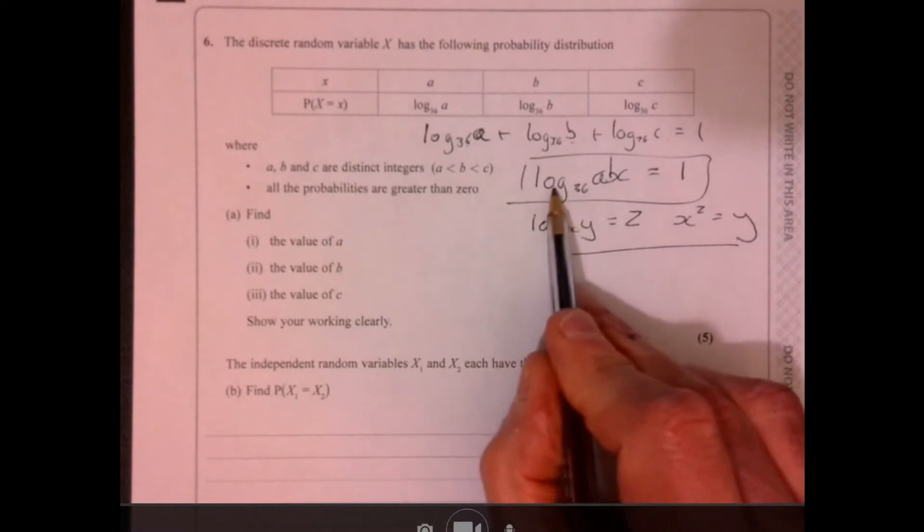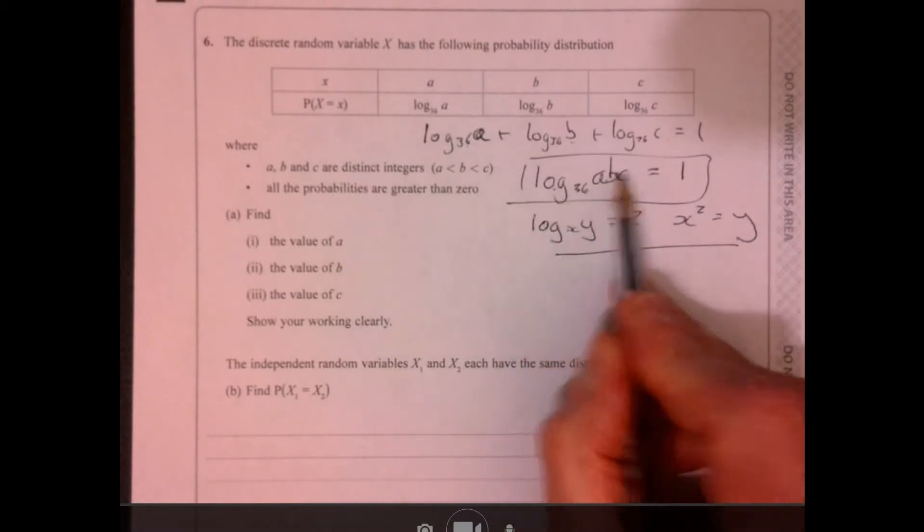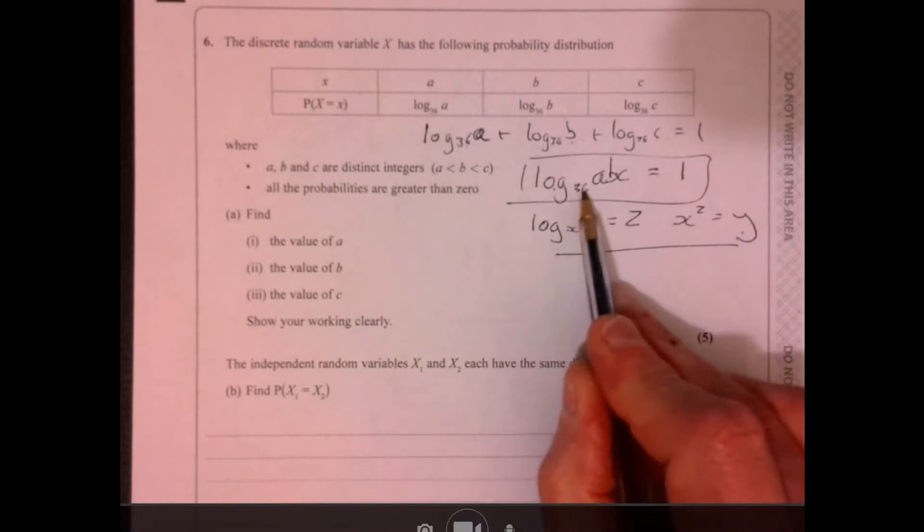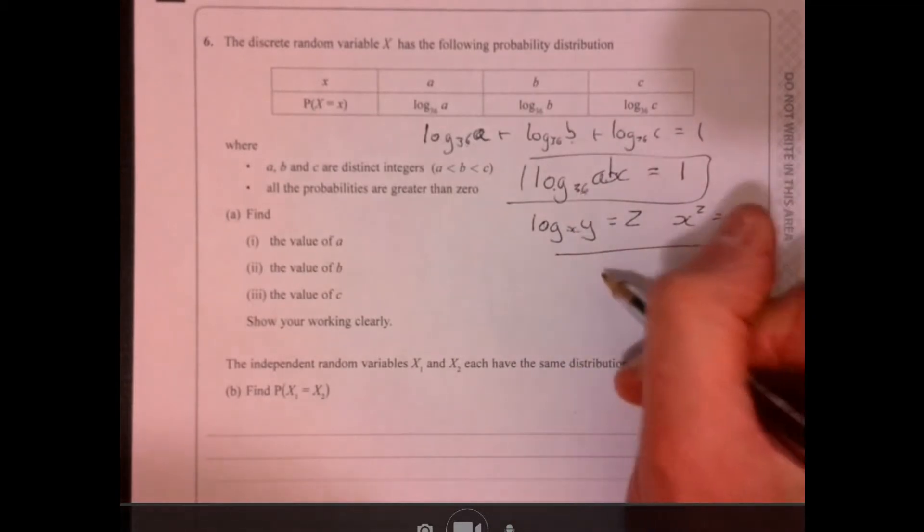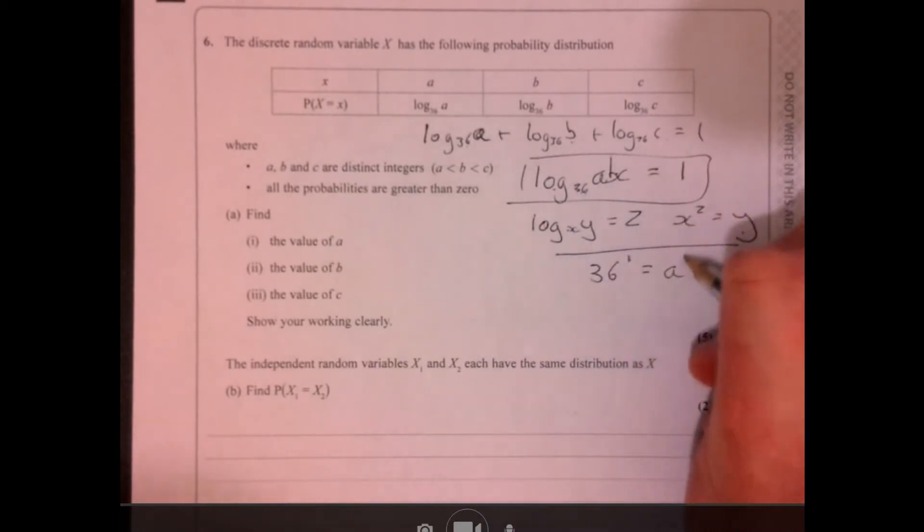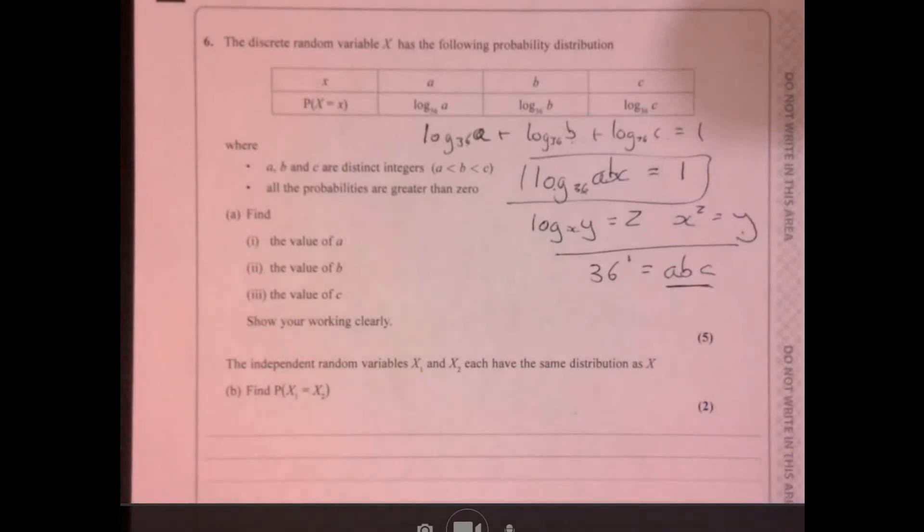I'm not going to go too much into that, but this is something that we really should know. Now, so, using this to rearrange, if the next bit is to 36, so in other words, it just means this, 36 to the power of 1 is equal to abc. So, in other words,